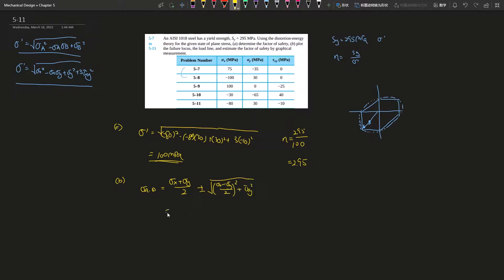So I think σ_a gives you 30.9 megapascals and then σ_b gives you negative 80.9 megapascals.